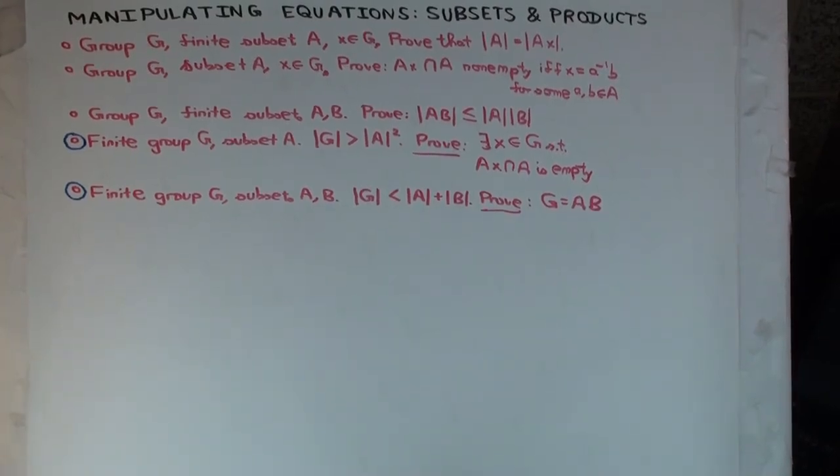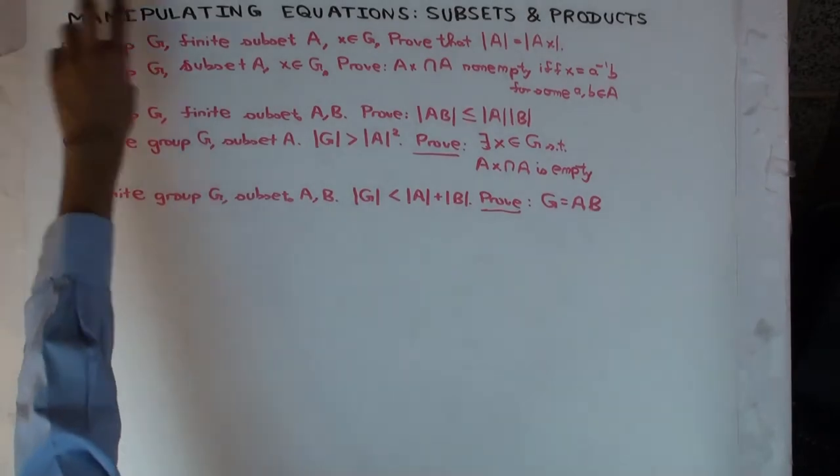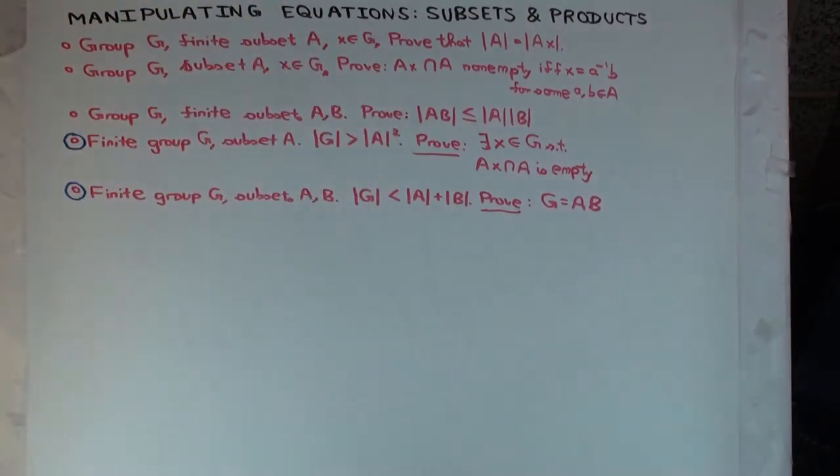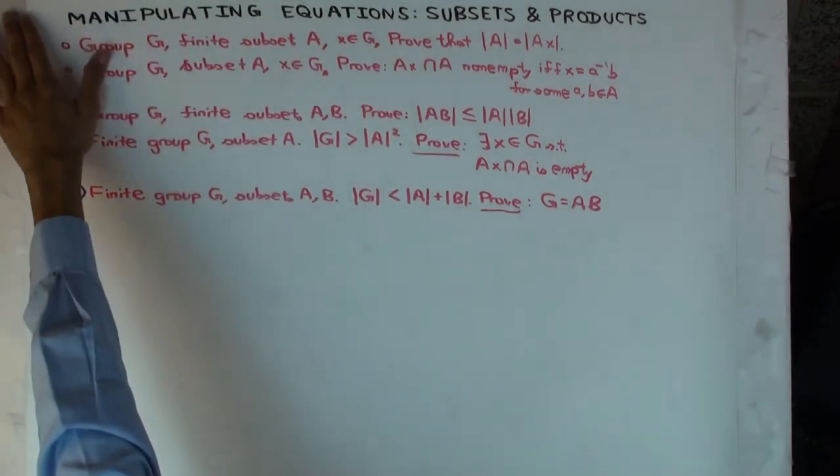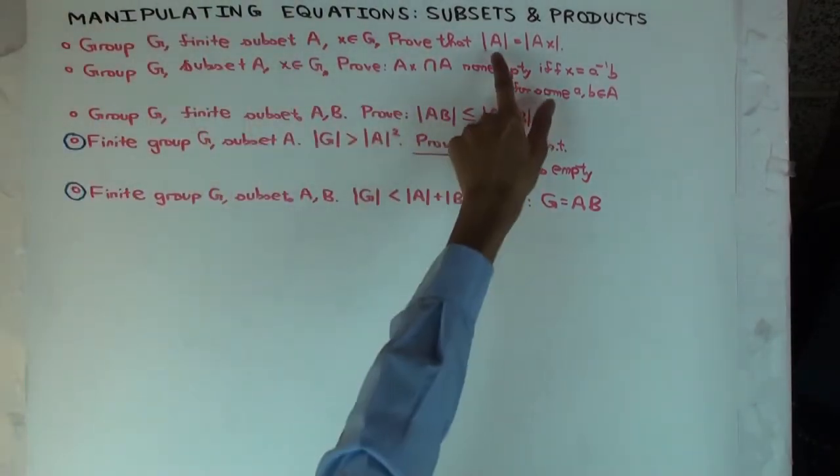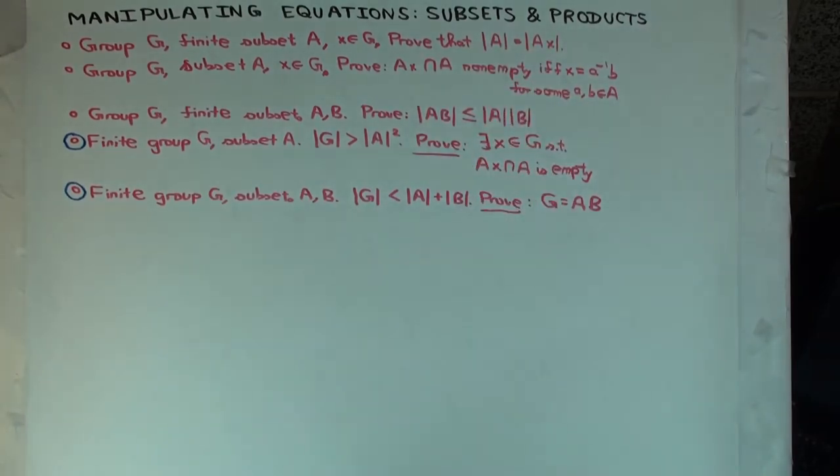In this talk we are going to do a few exercises involving manipulating equations in groups. So the first one says you have a group G and a finite subset A of the group G, and you want to prove that if X is an element of the group, then the size of A is the same as the size of A times X. The size of a set is just the number of elements and it's denoted with this absolute value type symbol. So why is this true? Why do A and AX have the same size?